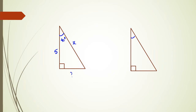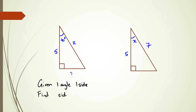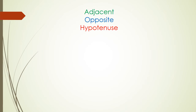The other type of question they could ask is where they have two sides — so they might have values like five and seven — and they ask you to find out what the angle is. So basically we use SOHCAHTOA in two situations: when you are given one angle and one side and you have to find the missing side, or you're given two sides and you have to find the angle. But to use SOHCAHTOA itself we've got to label some sides first.